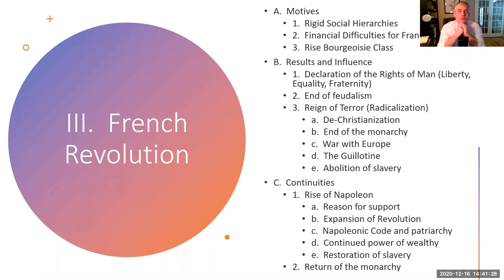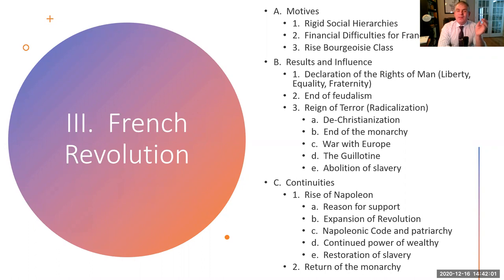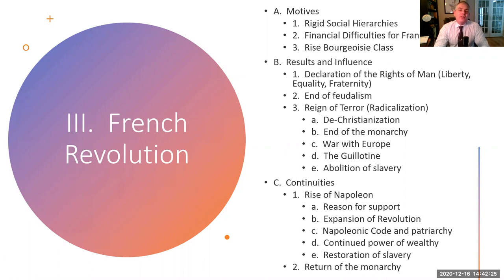France was an incredibly wealthy nation, but had a very poor government. The third thing is the rise of the bourgeoisie — an emerging wealth class making money off of trade, joint stock companies, and banking. They're highly educated, they're the ones reading the Enlightenment philosophers, they're as educated and as wealthy as the nobles. But this bourgeoisie class feels left out of the governing of France, and they want it. In AP European History I take about a week to go through this in detail, but for our purposes we're going to look at the results and influence. The French Revolution produces a document called the Declaration of the Rights of Man.